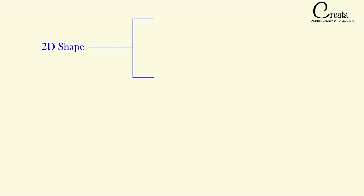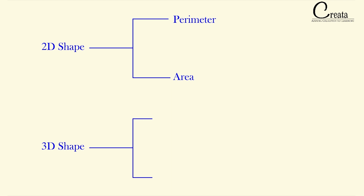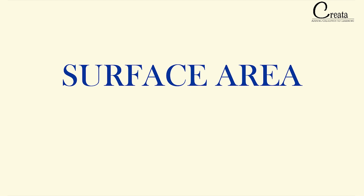While doing the 2D shapes, we saw two components: the perimeter and the area. Perimeter is the boundary of the figure and area is the surface enclosed by the figure. Similarly, 3D shapes also have two major components: the surface area and the volume.